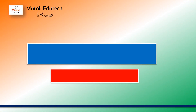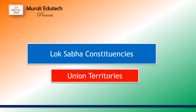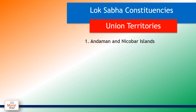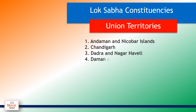Here are the list of Lok Sabha Constituencies of Union Territories: Andaman and Nicobar Islands, Chandigarh, Dadra and Nagar Haveli, Daman and Diu, Ladakh, Lakshadweep, Puducherry.